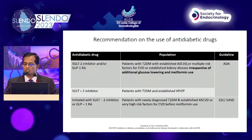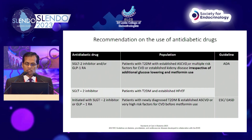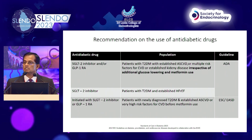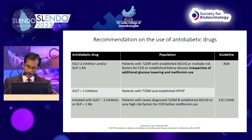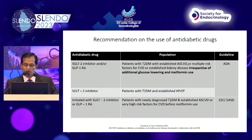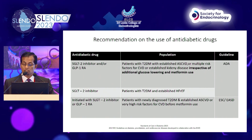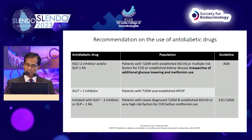Regarding recommendations for antidiabetic medications: the ADA says that for SGLT2 inhibitors and GLP-1 analogues, consider them in patients with type 2 diabetes with established CVD, multiple CVD risk factors, or established kidney disease. SGLT2 inhibitors can be considered in type 2 diabetes with established heart failure with reduced ejection fraction. The ESC/EASD say that for newly diagnosed type 2 diabetes with established CVD or very high CVD risk, you can consider SGLT2 inhibitors even before metformin — a key difference from the ADA.